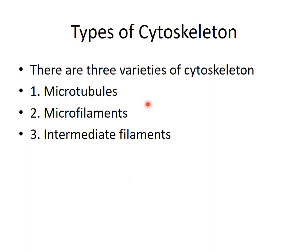There are three varieties of the cytoskeleton: the microtubules, the microfilaments, and the intermediate filaments.